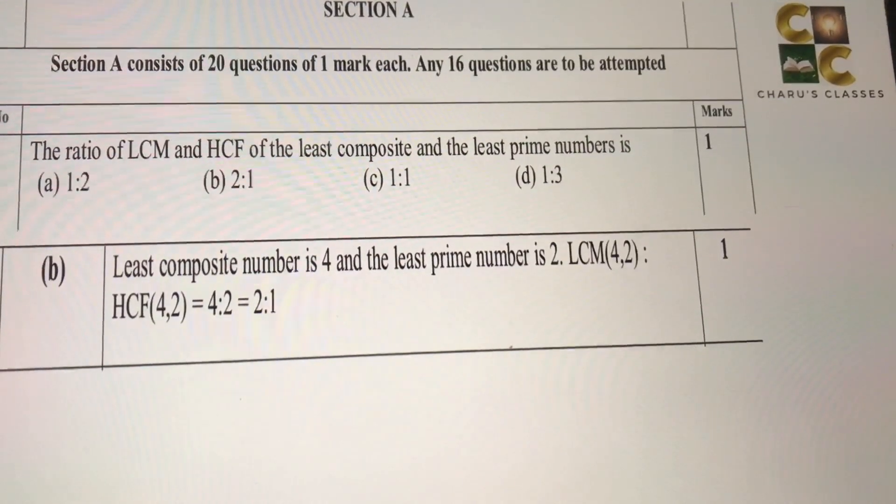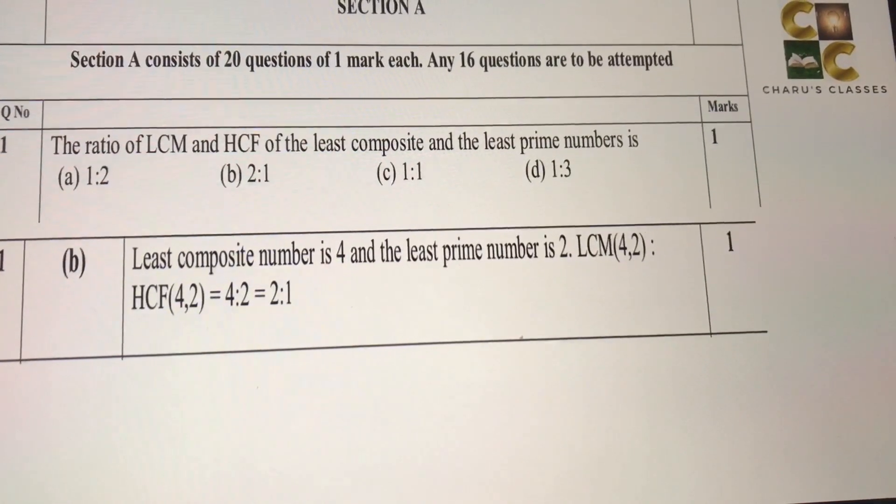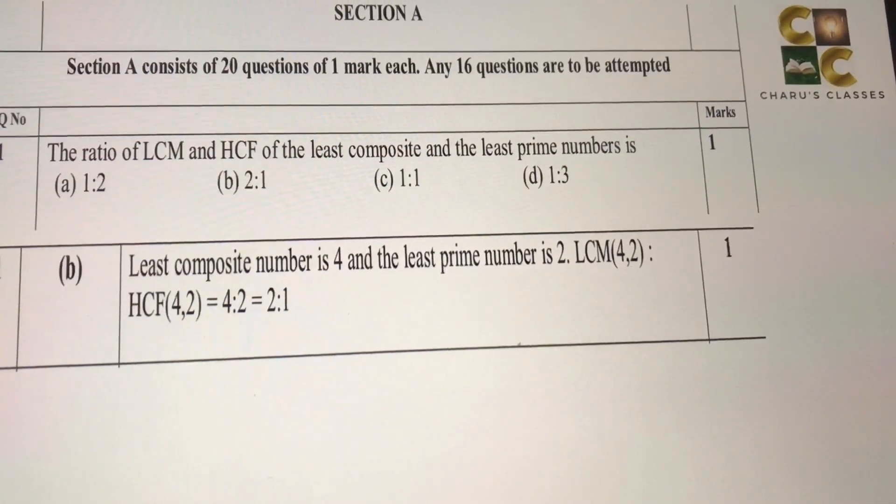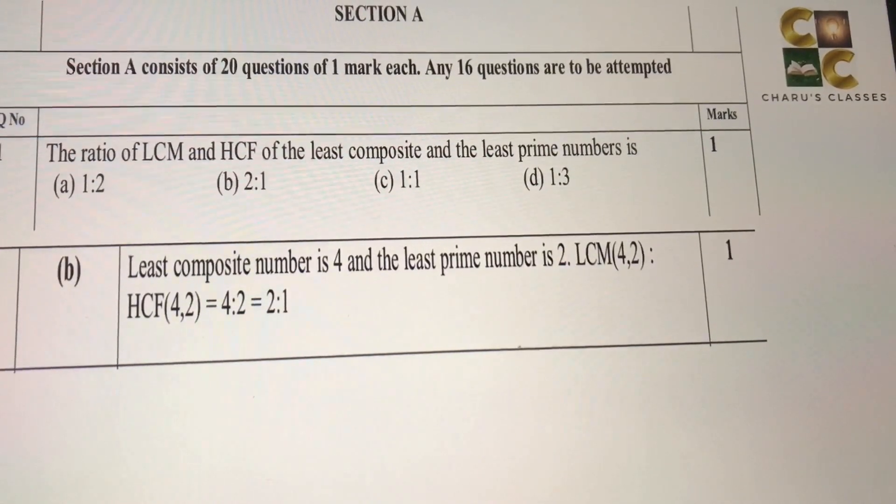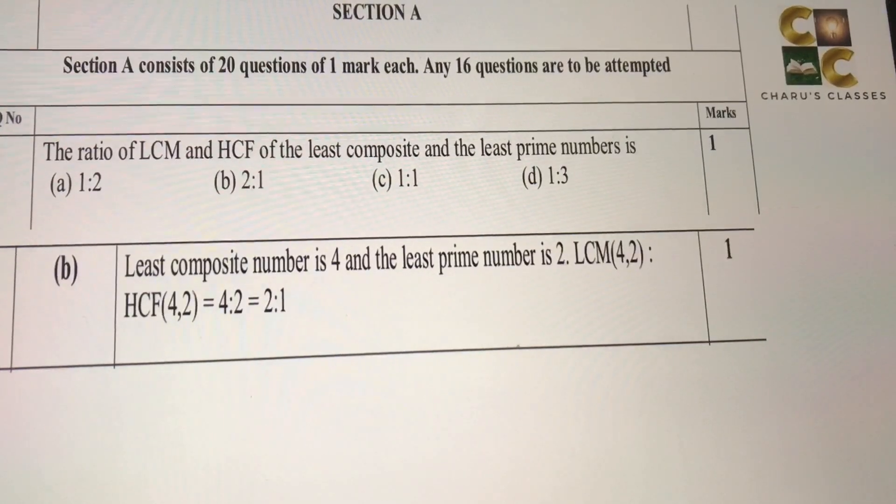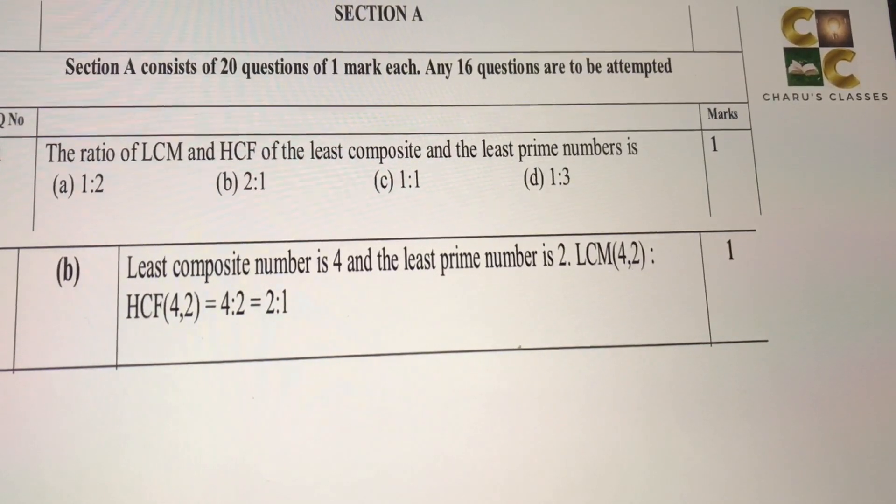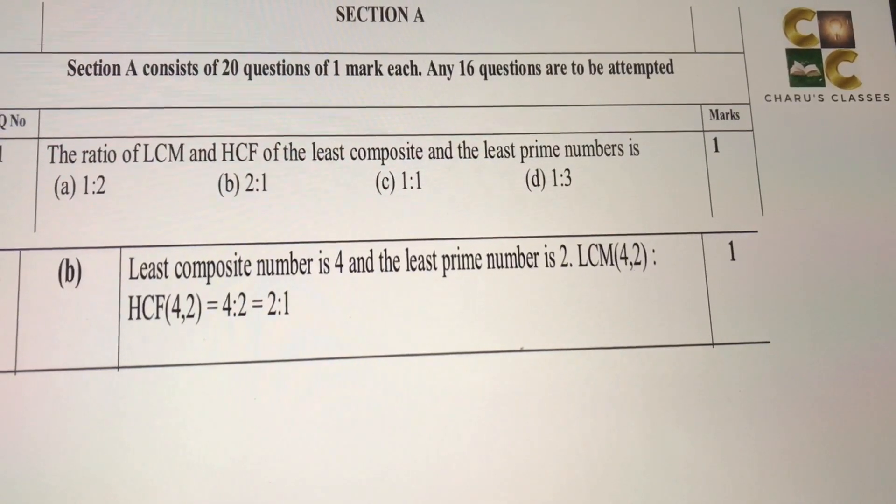First question: the ratio of LCM and HCF of the least composite and the least prime number is? The least composite number is 4, which has more than 2 factors, and the least prime number is 2. So if you have 4 and 2, you will get LCM and HCF, then the ratio, you will see, it's coming as 2 is to 1.